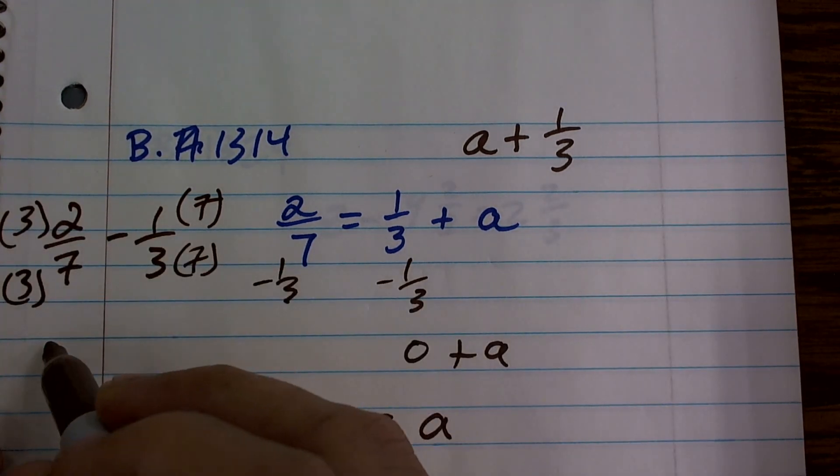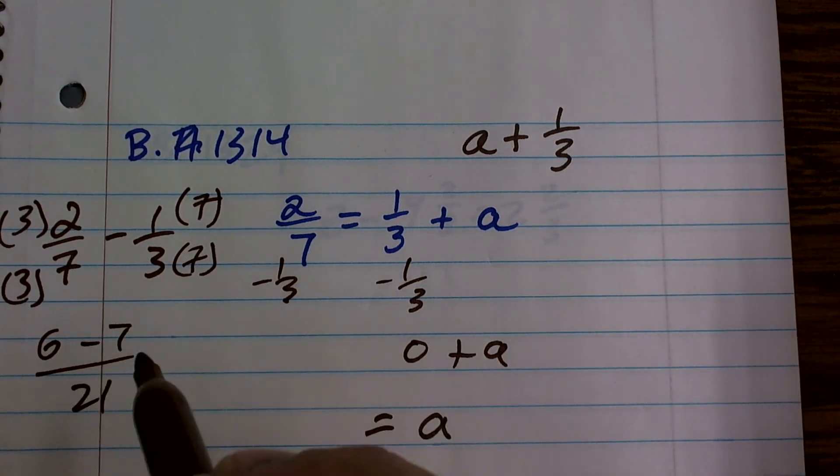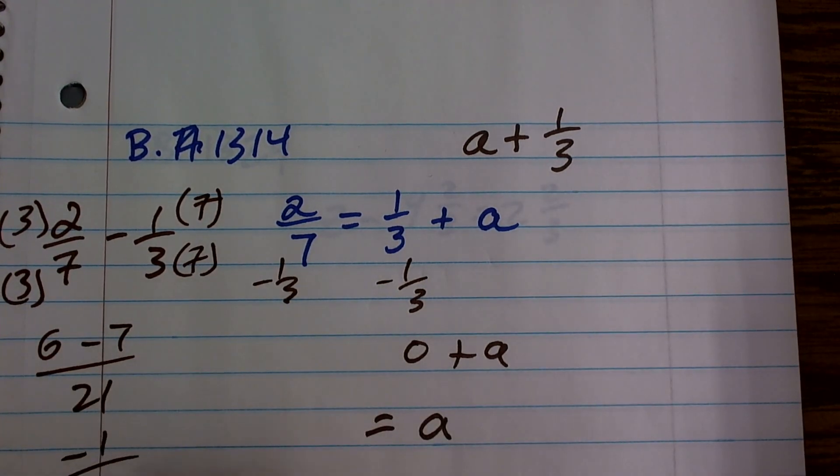So therefore, what I'll obtain is 6 minus 7 over 21, which equals negative 1/21.